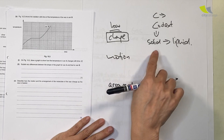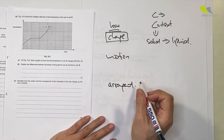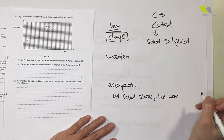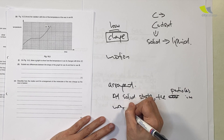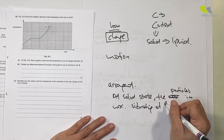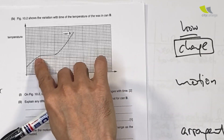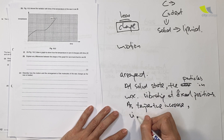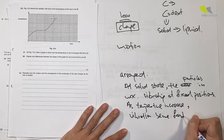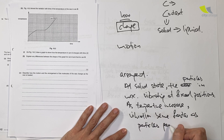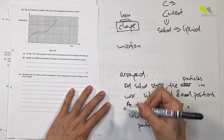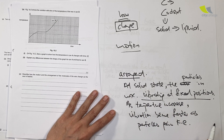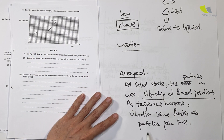When the wax is in a solid state, the particles in the wax are vibrating in fixed positions. As temperature increases, vibration becomes faster as particles gain kinetic energy. So far we have answered for motion — vibration — and arrangement — fixed position — and then we describe how as temperature increases, vibration becomes faster as particles gain kinetic energy.